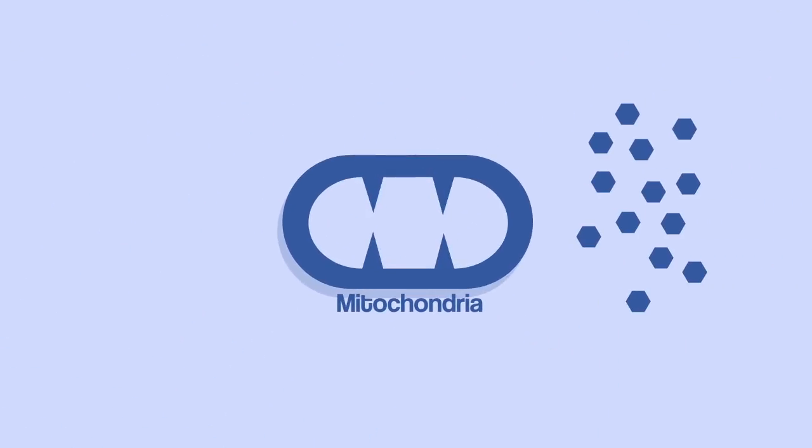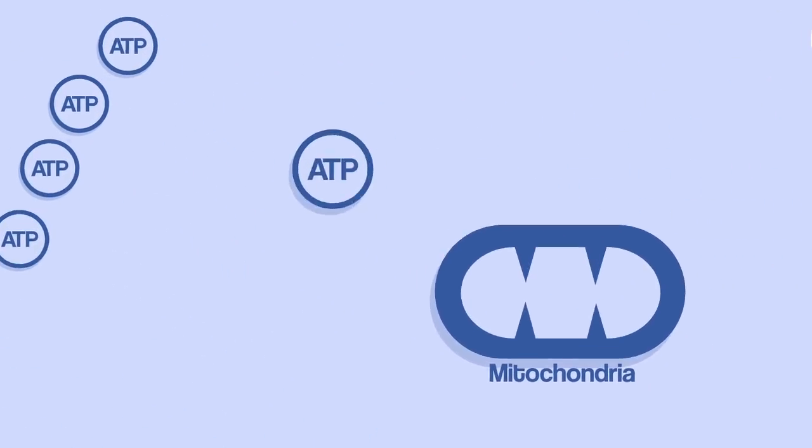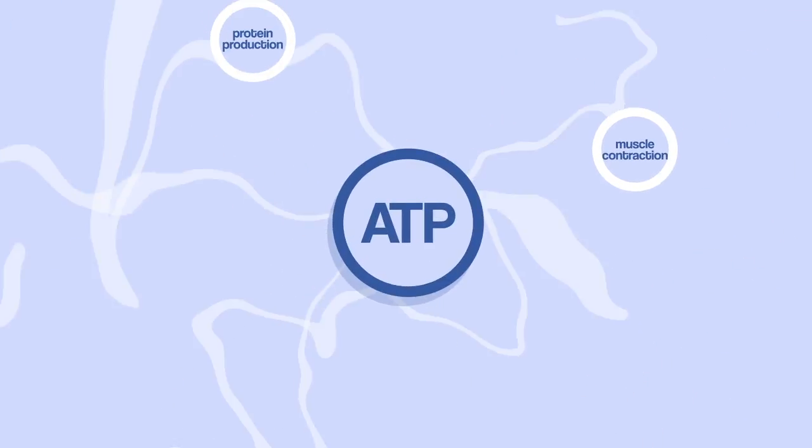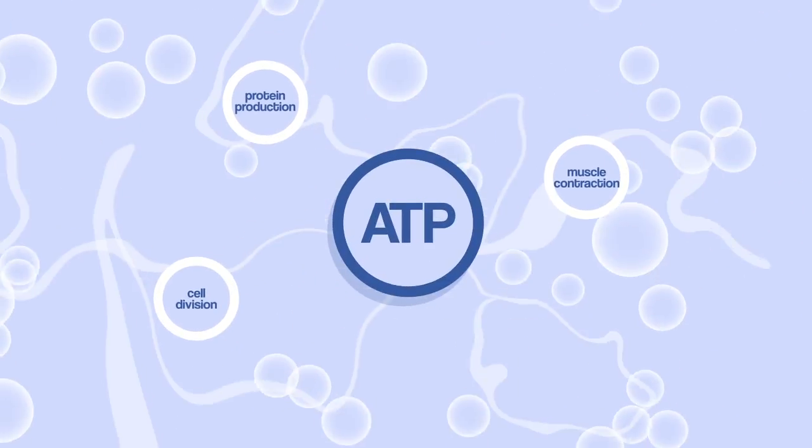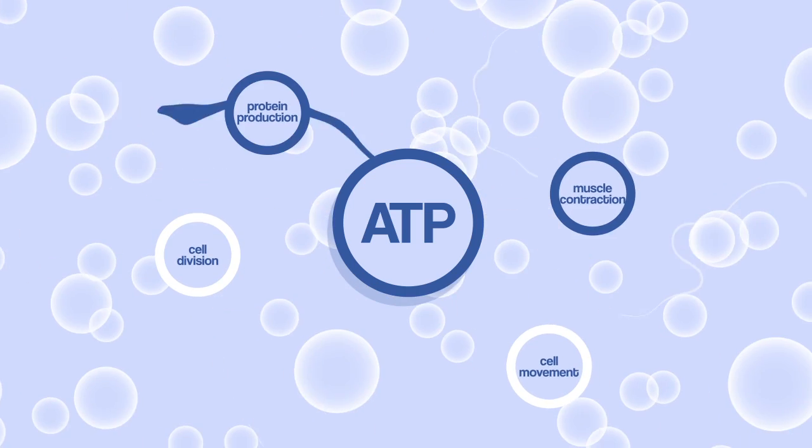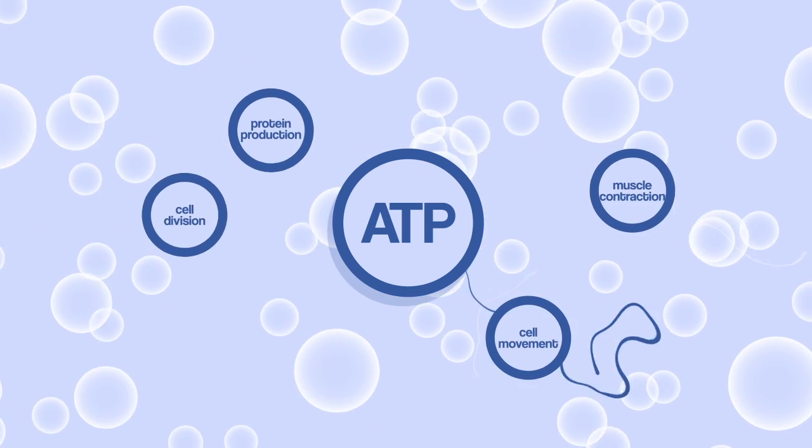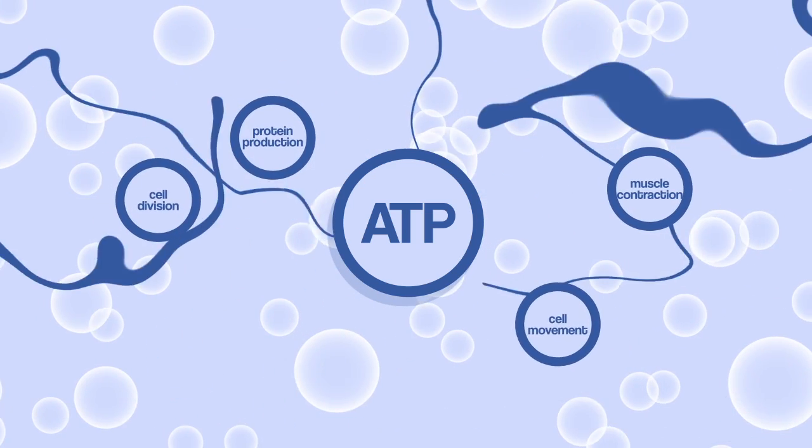They break down nutrients that you consume to generate ATP. ATP powers all the processes inside your cells, such as muscle contraction, protein production, cell division, cell movement, and literally everything else.